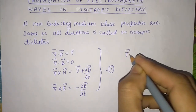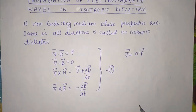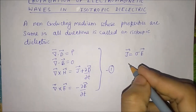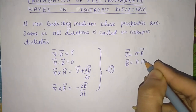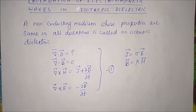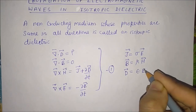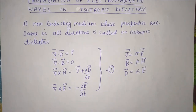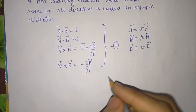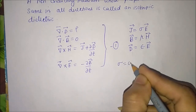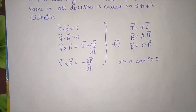Using J equal to sigma E where sigma is the conductivity, B equal to mu H where mu is the magnetic permeability, and D equal to epsilon E where epsilon is the permittivity, and using the fact that sigma equal to zero and rho equal to zero for a non-conducting medium.